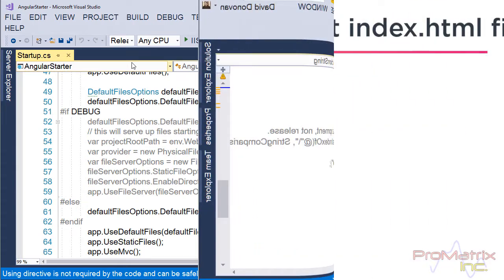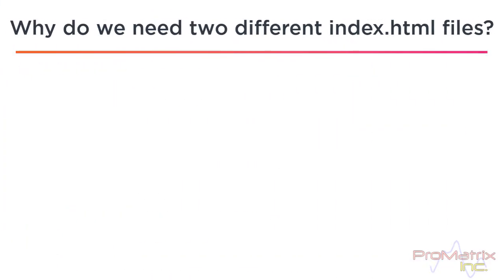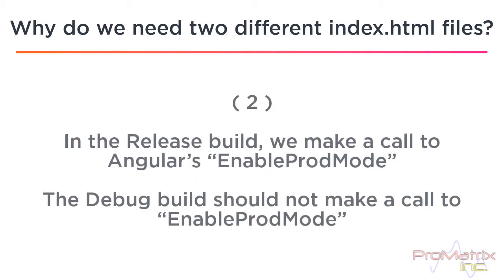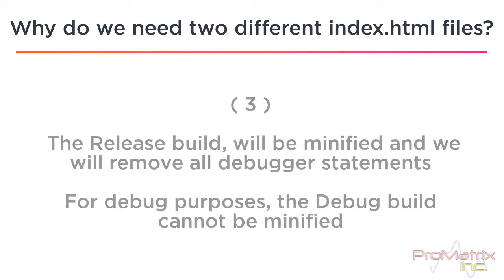Let's address the question of why we need two different index.html files. The release build should be bundled and the debug build should be unbundled. In the release build, we make a call to Angular's enable production mode. The debug mode should not make this call to enable production mode.